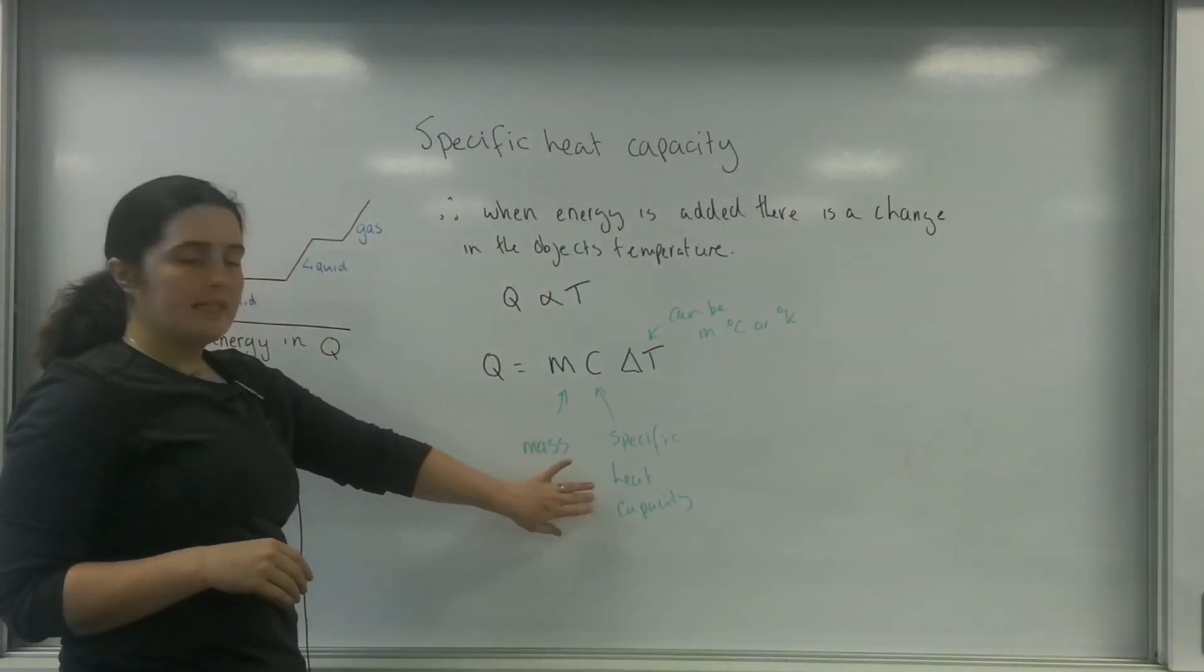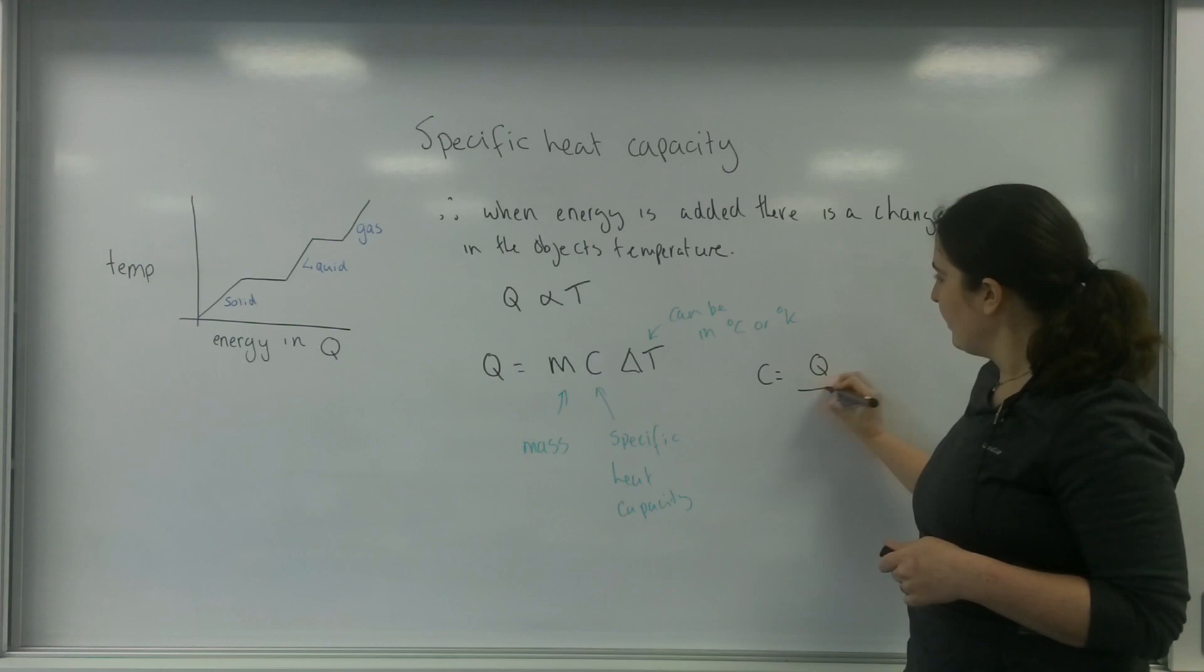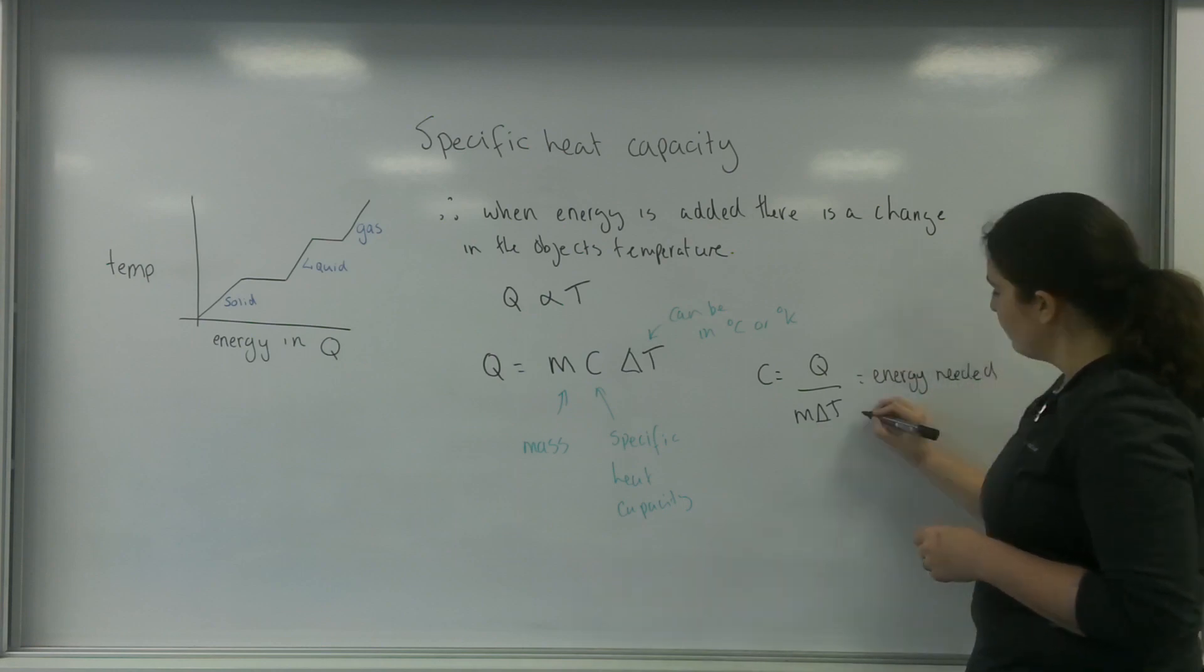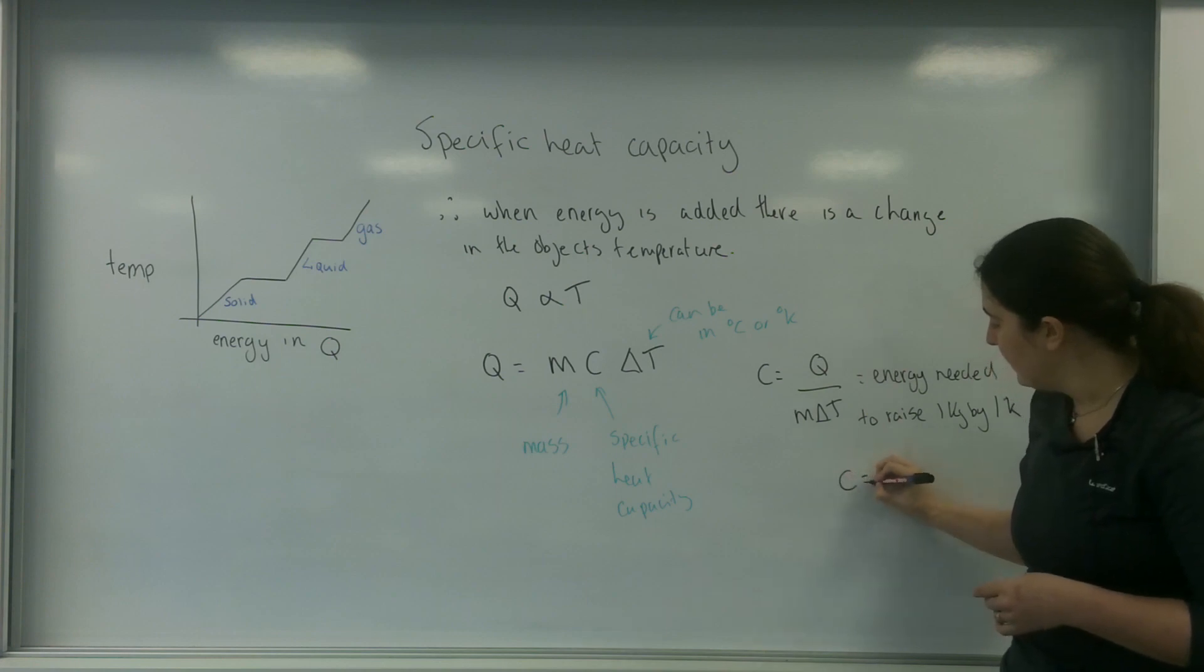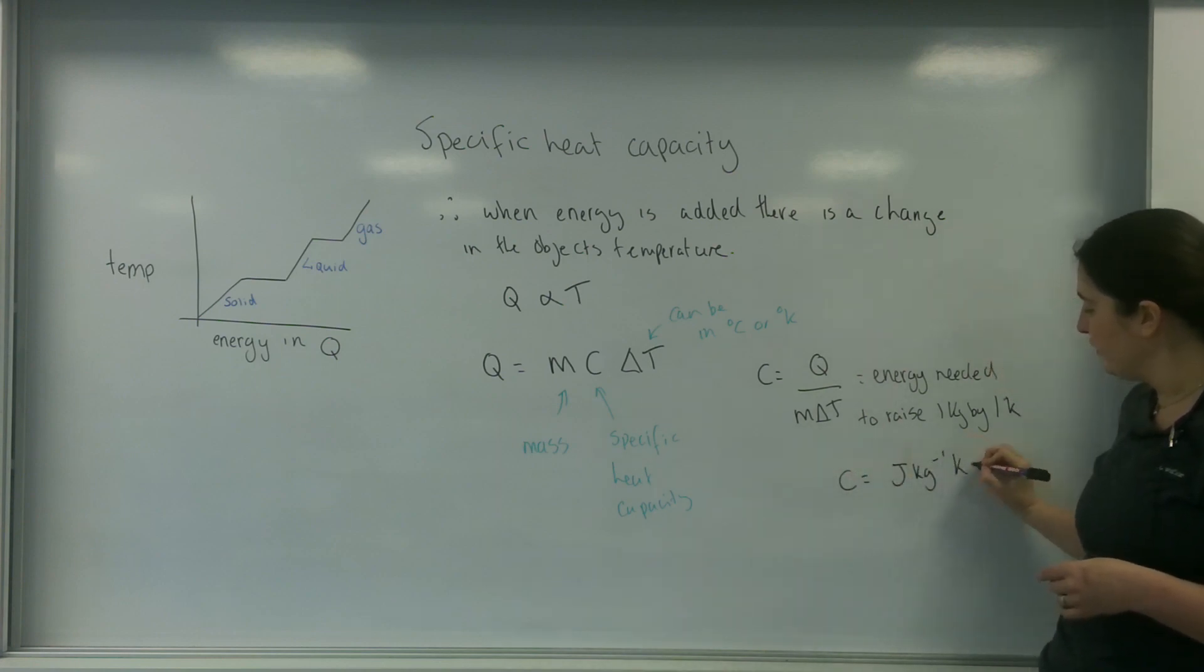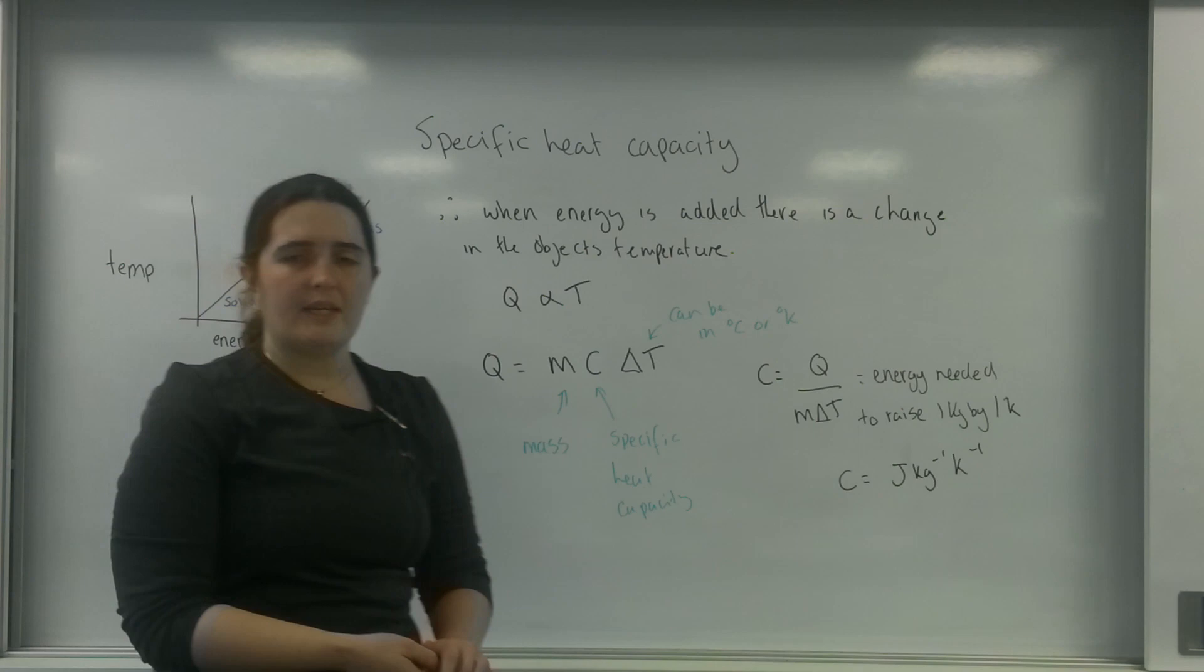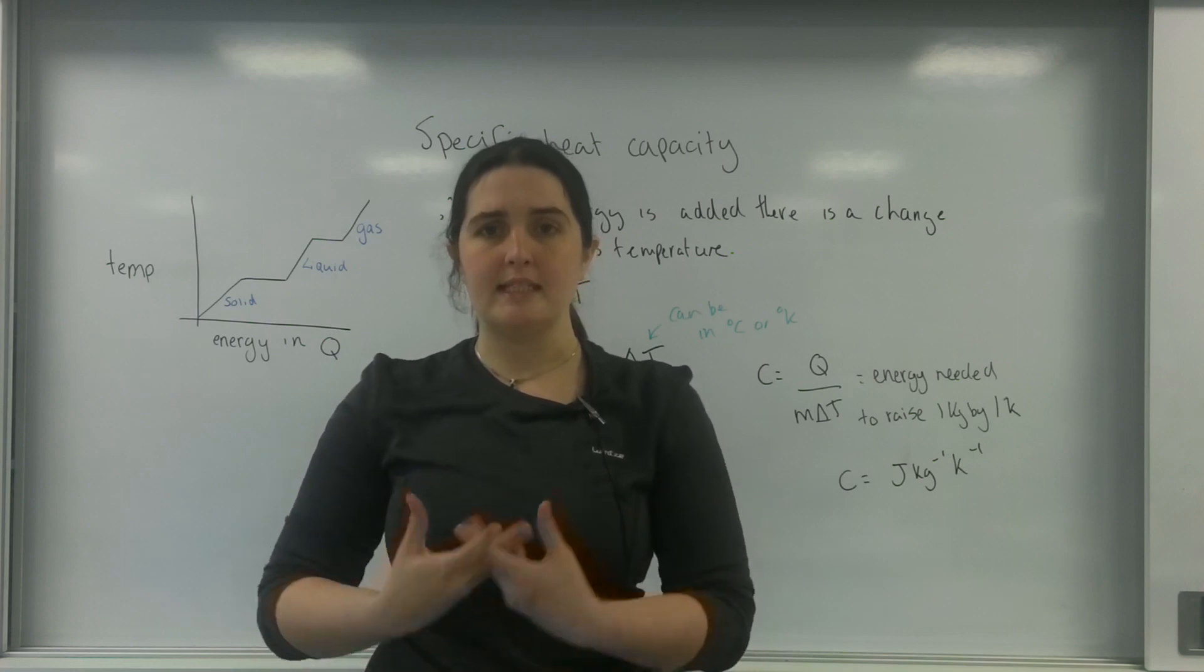This idea of specific heat capacity - C is the energy over mass delta T, or energy needed to raise one kilogram by one degree or one Kelvin. The units for specific heat capacity tend to be joules per kilogram per Kelvin, sometimes seen as degrees C. What this specific heat capacity is, is a material property. Different materials react differently to the same amount of heat energy.